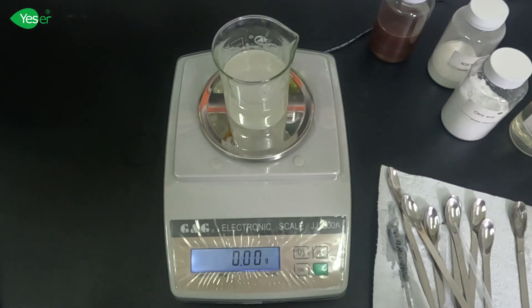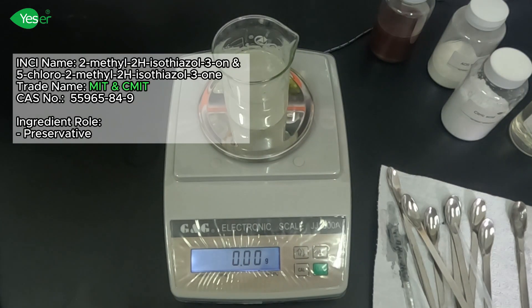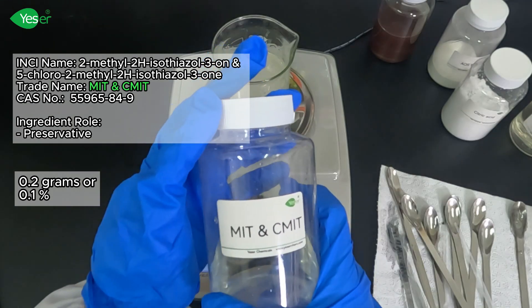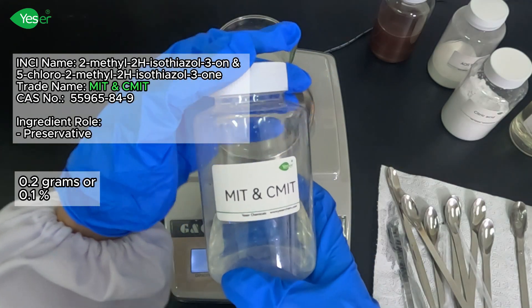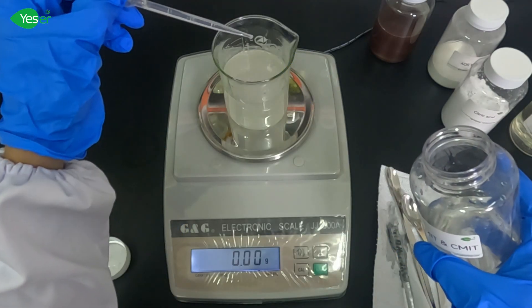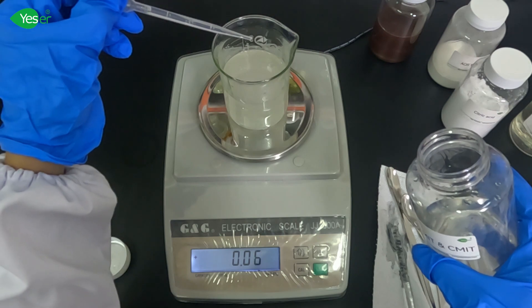Now we will add our MIT or our preservative. Weigh 0.2 grams of this or 0.1% for the formula. We're going to add this to prevent microbial growth in our product.